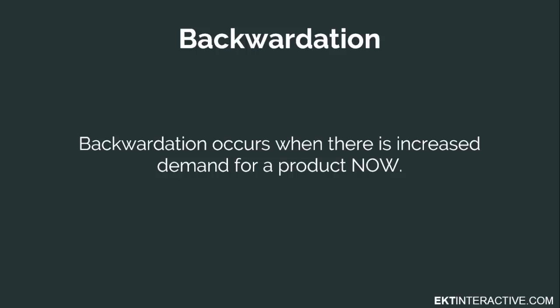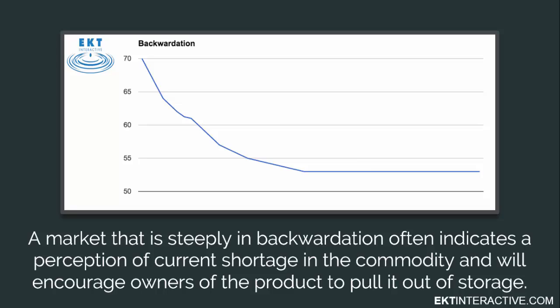So what is backwardation? The opposite of contango is a backwardated market, where there is a premium on current oil prices over the future. This occurs when there is increased demand for a product now, as can be the case in an expanding global economy or in times of supply constraint, such as wars or unrest in the Middle East. A market that is steeply in backwardation often indicates a perception of current shortage in the commodity and will encourage owners of the product to pull it out of storage.